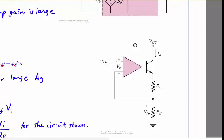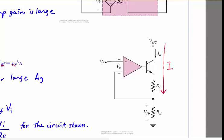We have an op amp driving an NPN transistor. We have a load connected at the emitter, and then in series with that load is a resistor, R sub E — that's our sampling resistor. If we apply some voltage VN, it's going to drive a current into the base of that transistor, which generates a current I out through RL. There is some gain in the op amp, and then there is current gain in the transistor.